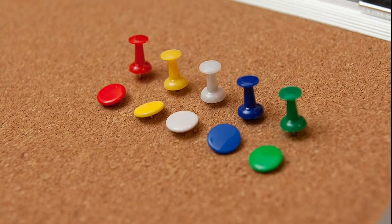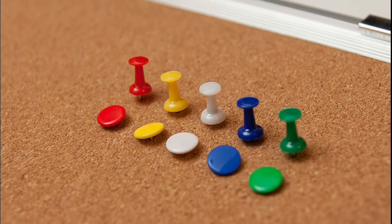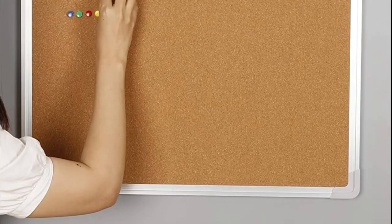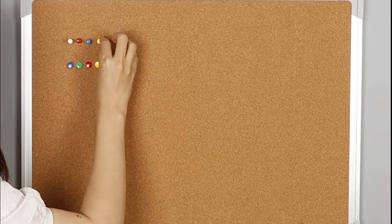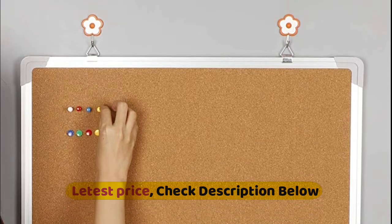Natural cork surface of the tack board is great for pinning notes, notices, supplies, messages, pictures, photos, memos, calendars, menus, reminders and more. The memo board has heavy-duty aluminum frame. Perfect vision thumbtack board for planning schedules, inspiration and chores organization.